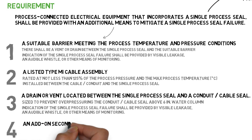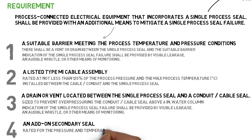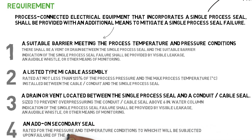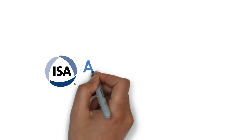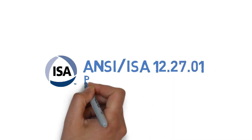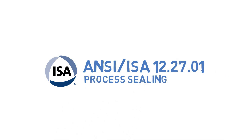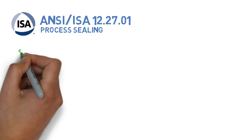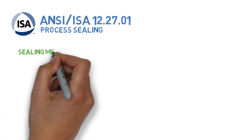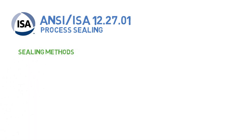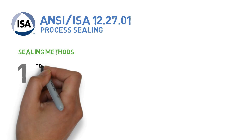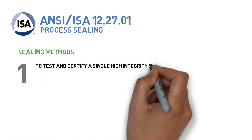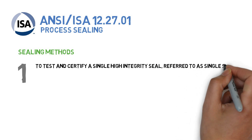An add-on secondary seal rated for the pressure and temperature conditions to which it will be subjected upon failure of the single process seal is another option. CSA 12.27.01 identifies two sealing methods: the first is to test and certify a single high integrity seal, referred to as a single seal.